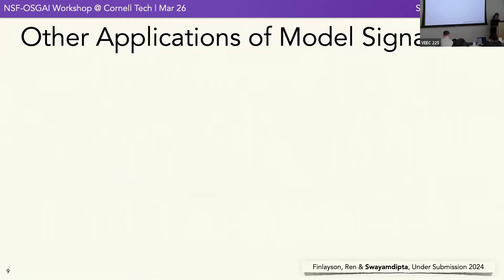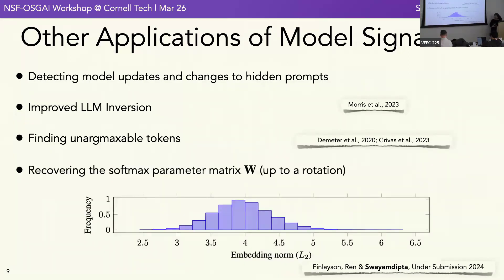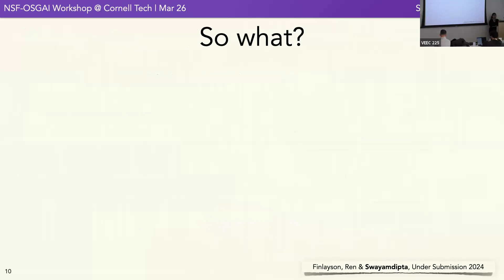Other applications include detecting model updates — this morning Graham and Tatsu were noting they didn't realize when OpenAI updated the model, so potentially this is possible. We're also working on methods to detect if a model went through RLHF, finding maximal tokens, LLM inversion to figure out hidden prompts, and to a certain extent even recovering the parameter matrix up to a certain rotation.